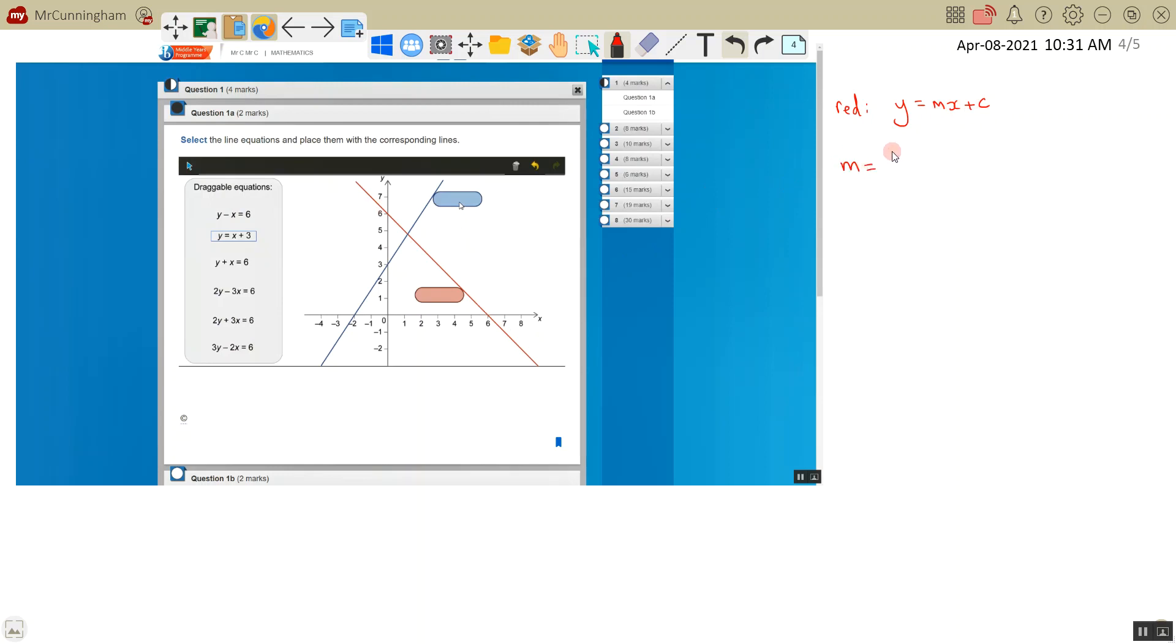We know the gradient is vertical over horizontal, or you could use the formula y2 minus y1 over x2 minus x1. If I pick two points on this line, I'll pick this one which is (0, 6) and this one which is (6, 0), as I can see the line definitely goes through those points. Let's label these: this is x1, y1 and x2, y2.